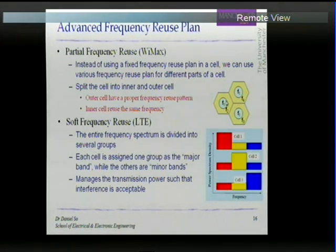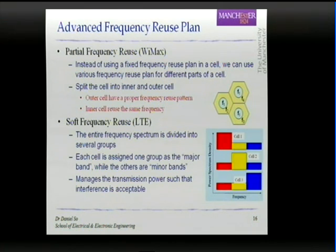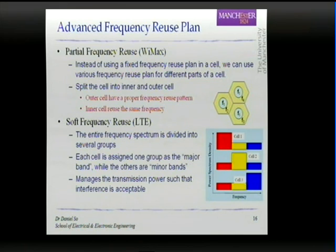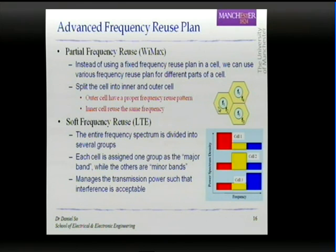Serving the inner cell and the outer cell — for inner cell users who are nearer to the base station, the base station will transmit with a much lower power. By transmitting with a much lower power, it will cause less interference to other users in another cell. However, for users in the outer cell — in the yellow zone — because they are further away from the base station, the base station has to increase transmission power so that it can receive a proper signal.